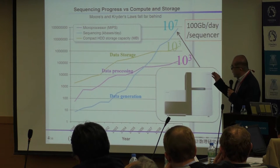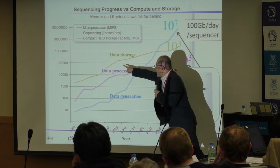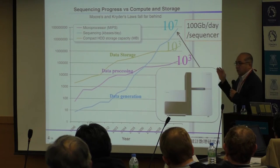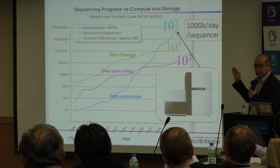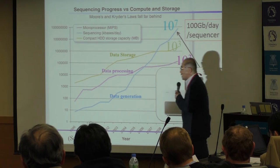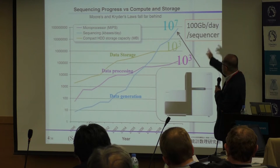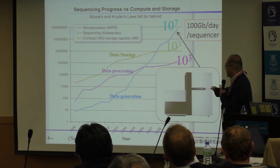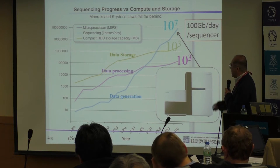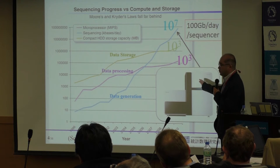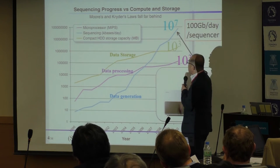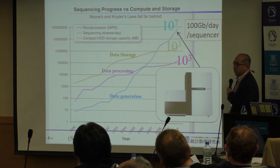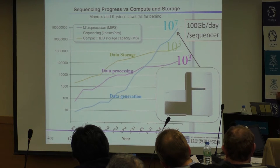Do you understand why this curve is parallel to the other curve? Because both technologies were supplied from the same computer vendors. On the other hand, this other curve shows the power of the next-generation sequencer to read DNA sequences, and it can be regarded as a good index to describe how much big data we have. You can see that over 15 years, the power of the next-generation sequencer has grown enormously. So it is obvious that we have to challenge the big data problem.